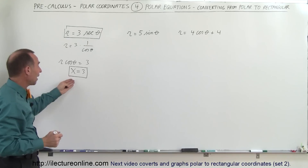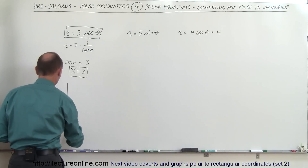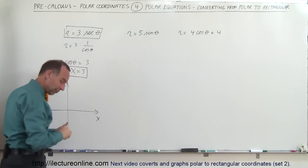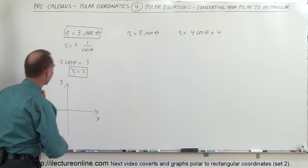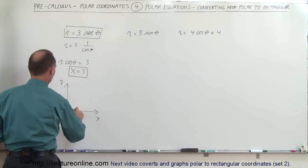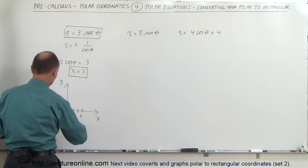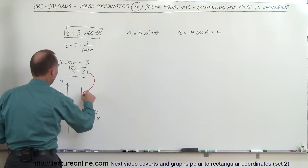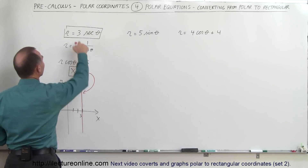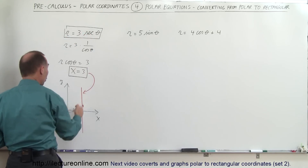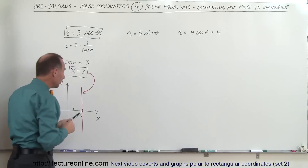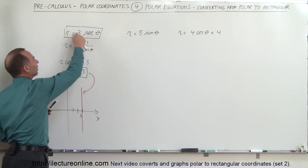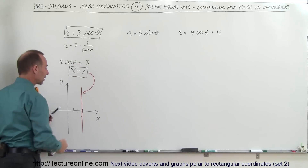That is the Cartesian or rectangular equivalent of the equation r equals 3 secant of theta. If we grab this equation, which is easy to graph — here's our y-axis, there's our x-axis — using red, x equals 3 would be at 1, 2, 3, right there. This line here represents x equals 3. So this polar equation also gives you this straight line, though it would be a little more difficult to plug in various values for theta to realize that.